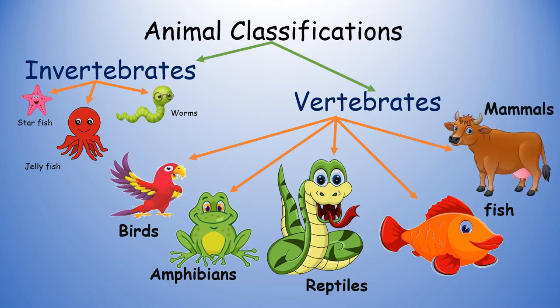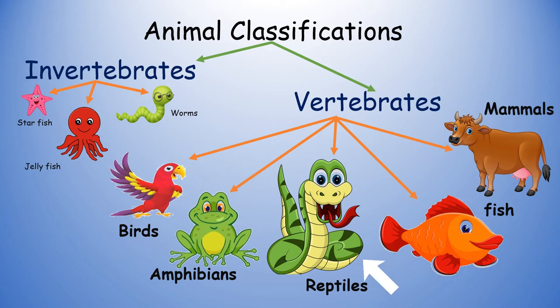Let us understand more about reptiles. They are distinguished by having a dry scaly skin and typically laying soft-shelled eggs on land. Some examples of reptiles are snakes, lizards and crocodiles.